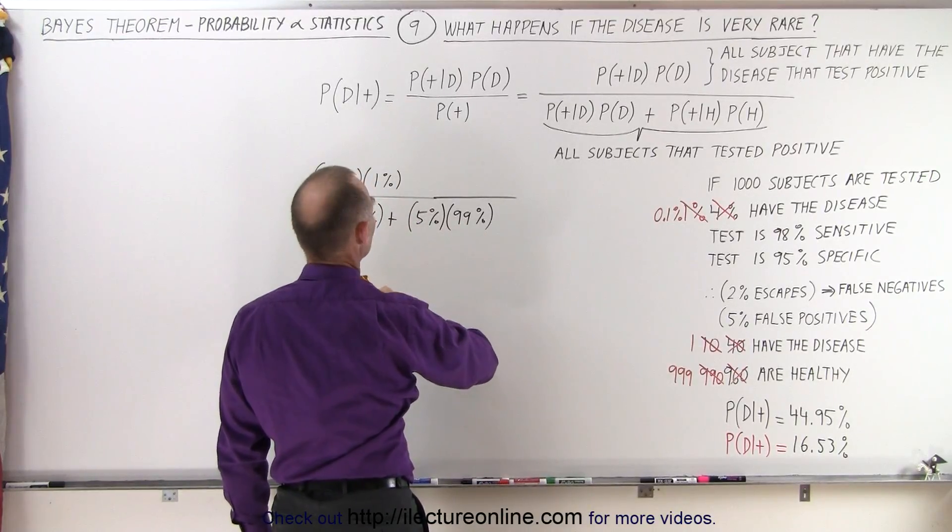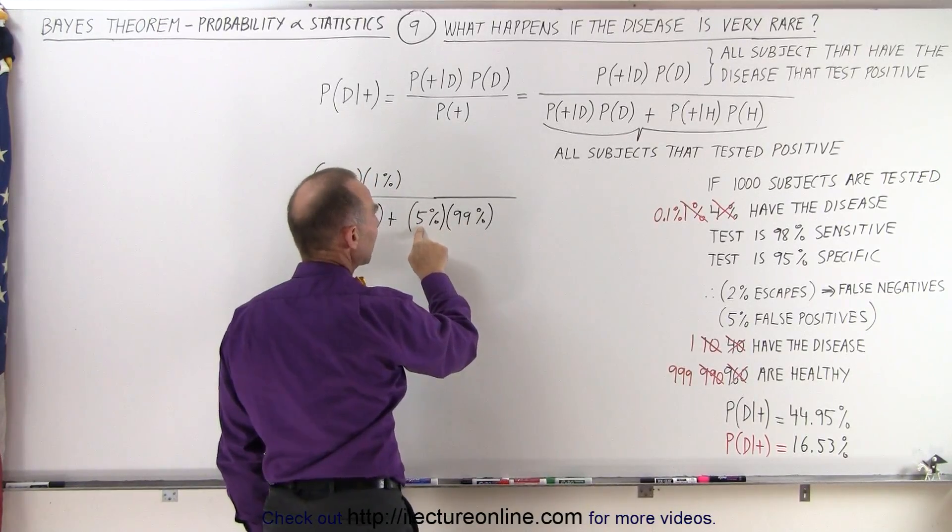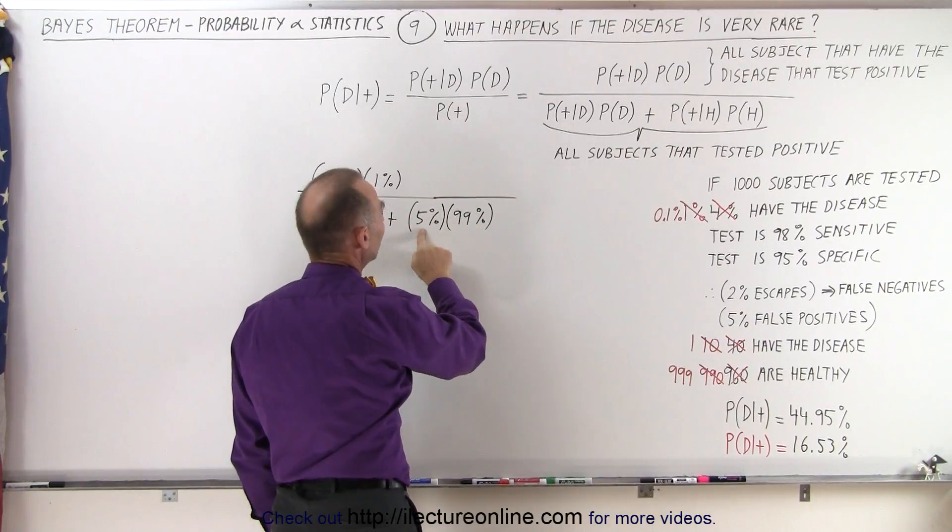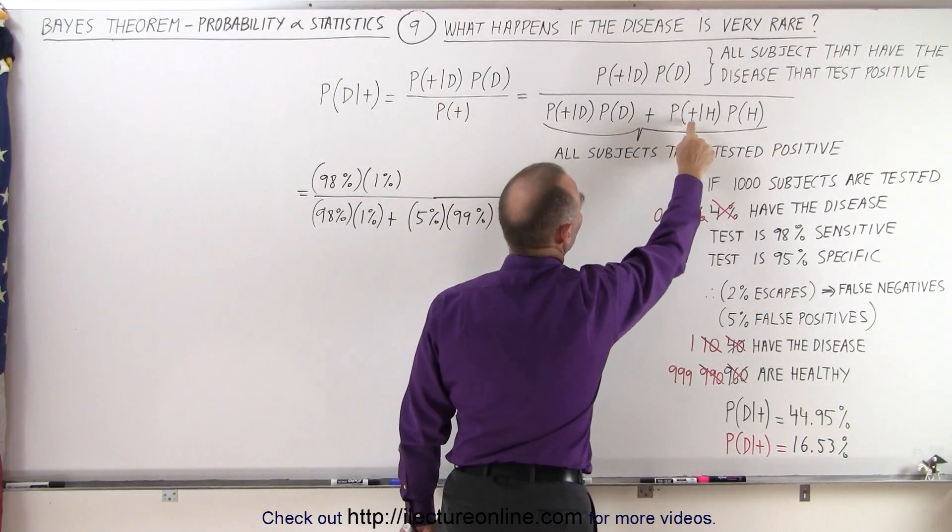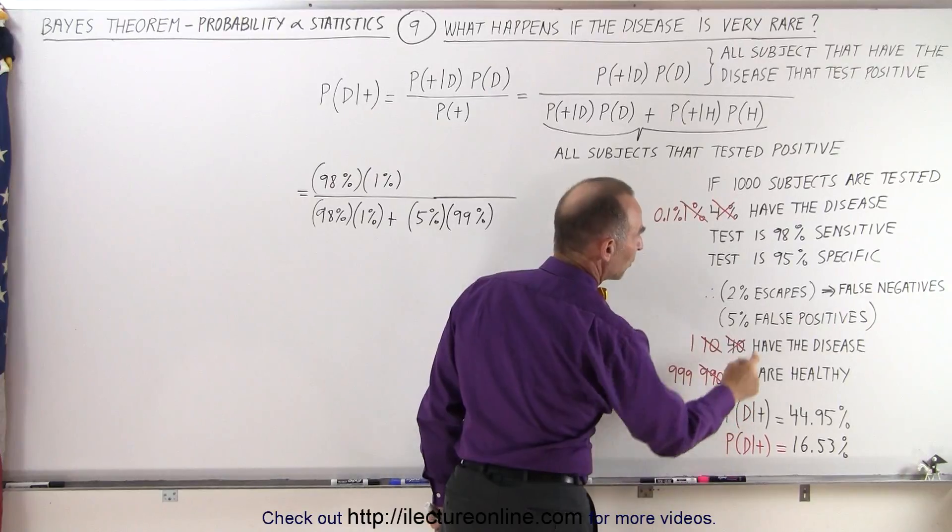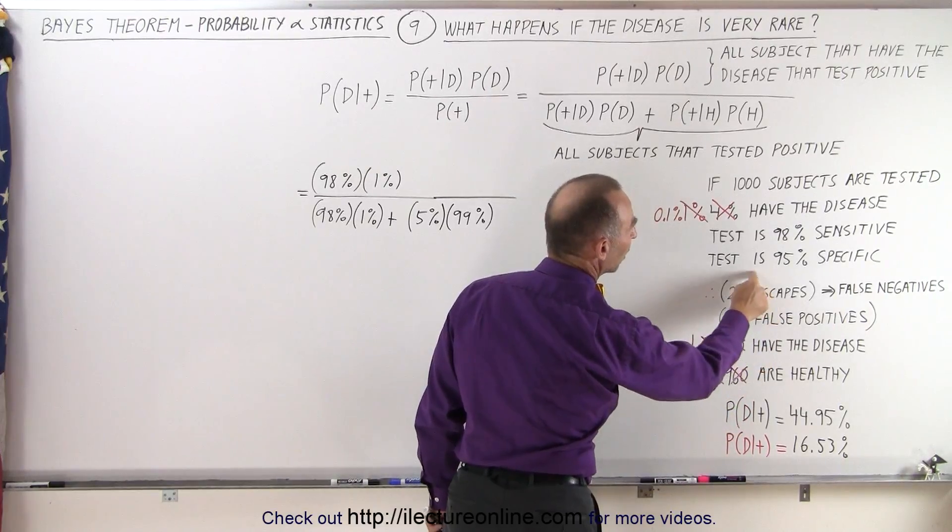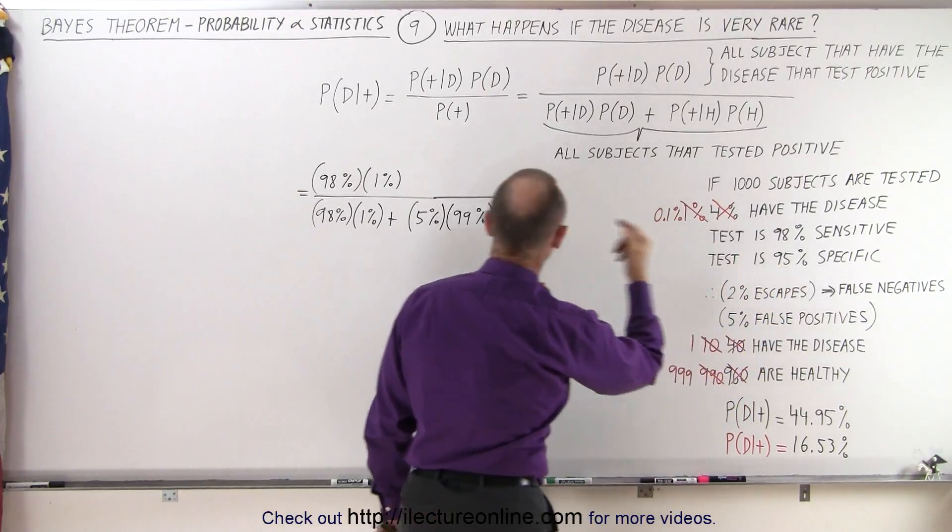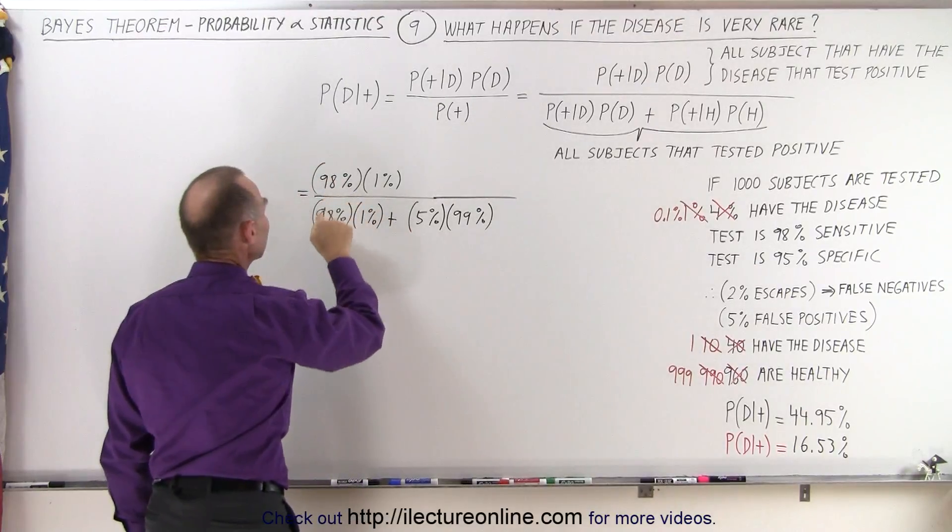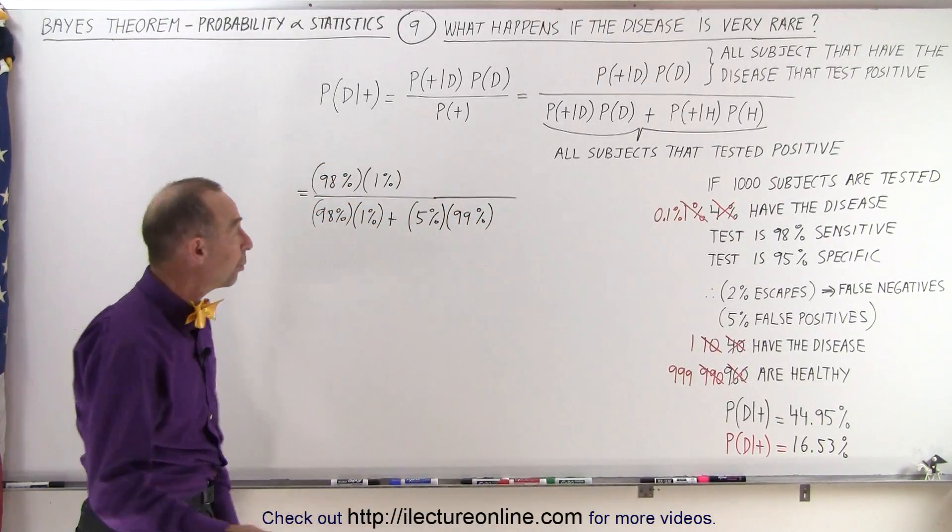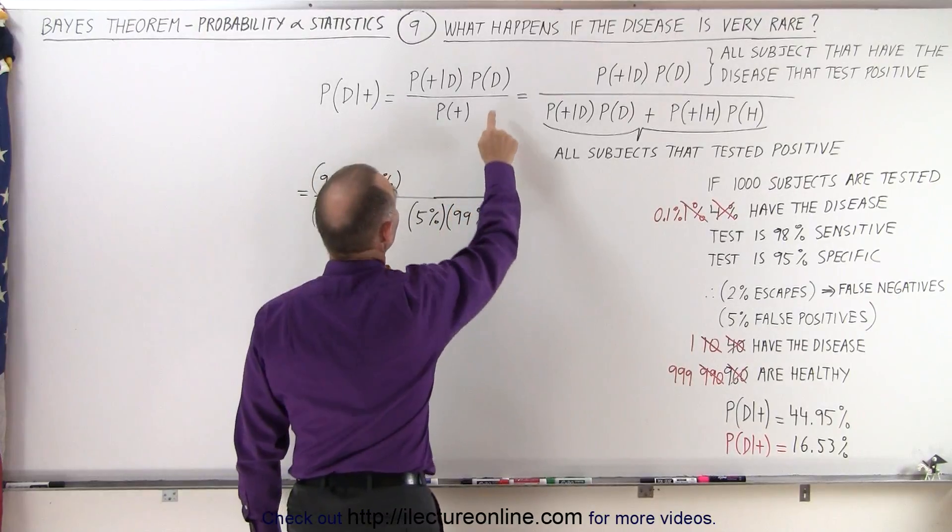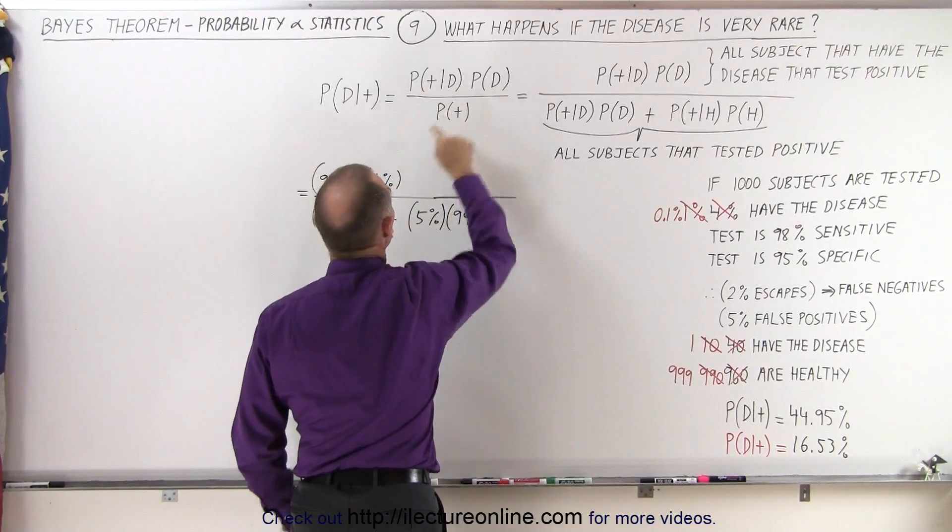And the 5% here, that wouldn't change because that's the probability that someone would test positive if they were healthy. That would be the false positive, 100 minus 95%, which is 5%. So the 98% and 5%, that would not change. What would change is the probability that the person tested would have the disease. That would now change from 1% to just 0.1%.